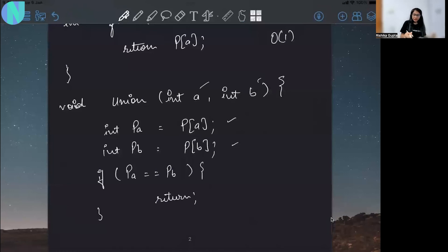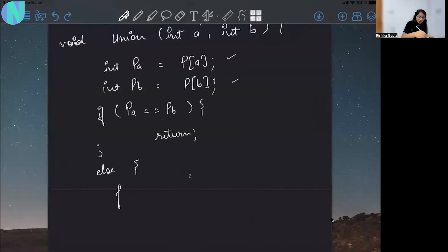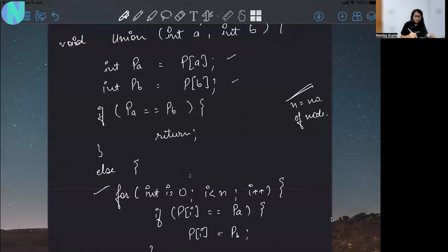We are going to run a for loop from int i equal to 0, i less than n, and i plus plus, where n is the number of nodes. Whatever you will present in the graph or tree or set in total sets, that is n. So you will iterate on the whole parent array and then you are going to check if p of i is equal to p of a, which basically says whatever your array entry is equal to p of a, now change it to p of b. So this is your simple union operation.